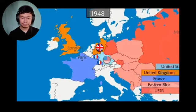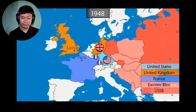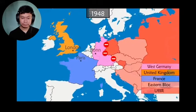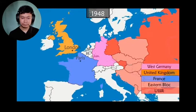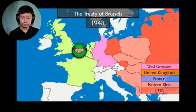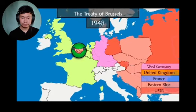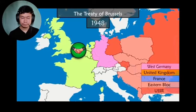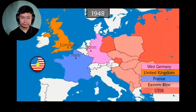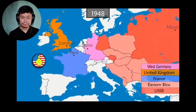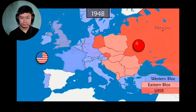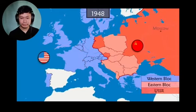France, the United Kingdom and the United States agree to unite their occupation zones in Germany in order to create a democratic German state that will block Soviet influence. In addition, the Benelux countries, France and the United Kingdom sign a defensive alliance to protect themselves against a possible return of German power and against a military intervention by the USSR, which has the largest army in the world. The United States offers credits to Europe via the Marshall Plan to accelerate reconstruction and stem the spread of communism. Tensions rise, and the continent is divided by what is called the Iron Curtain. It's the beginning of the Cold War.